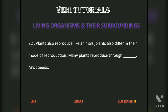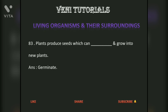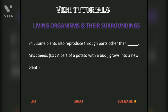Plants also reproduce like animals and differ in their mode of reproduction. Many plants reproduce through dash. Answer: Seeds. Plants produce seeds which can dash and grow into new plants. Answer: Germinate. Some plants also reproduce through parts other than dash. Answer: Seeds. For example, a part of a potato with a bud grows into a new plant.